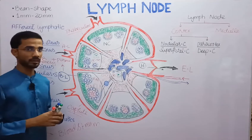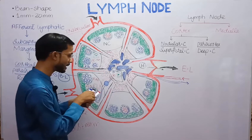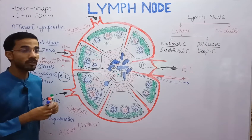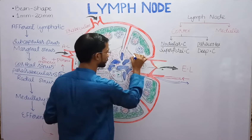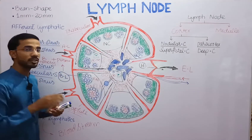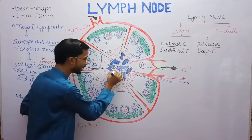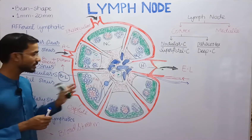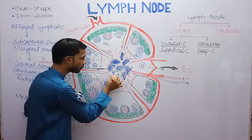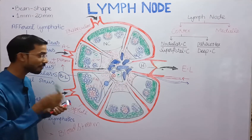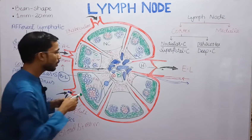Next is the medullary region. Here you can see different medullary sinuses, and between the medullary sinuses is the medullary cord, shown in blue. Three types of cells are present in the medullary cords: plasma cells, macrophages, and reticular cells or reticulin fibers.